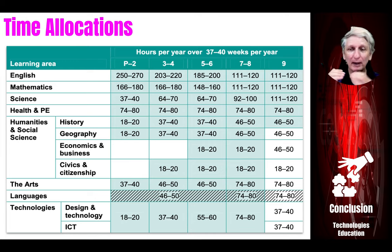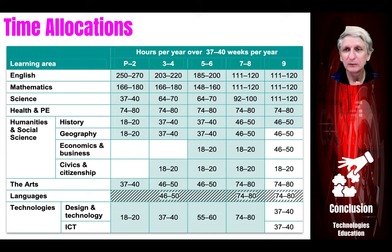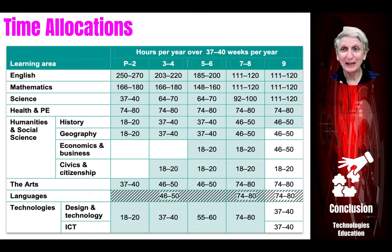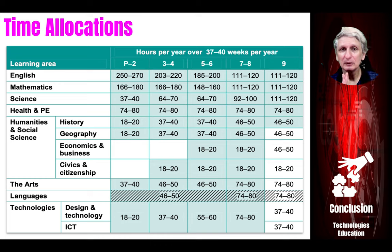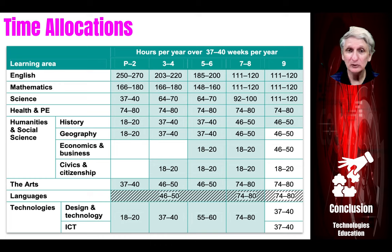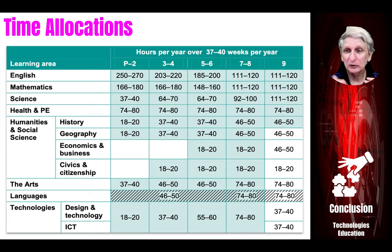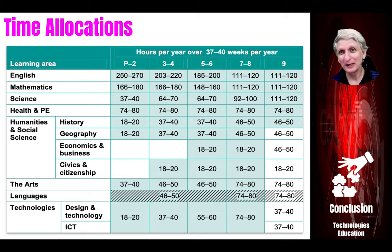Some schools will decide to have, instead of one hour a week over the entire year, two hours a week for half a year. There are ways of adjusting that, but overall there should be 40 hours addressed to cover the expectations of the technologies learning area — both digital technologies and design and technology — so 20 hours each if they were receiving the same allocation. And then that extends up to 60 hours in years five to six.